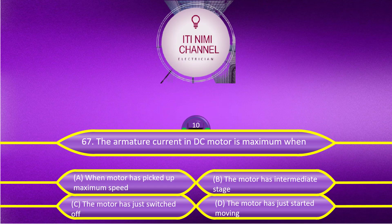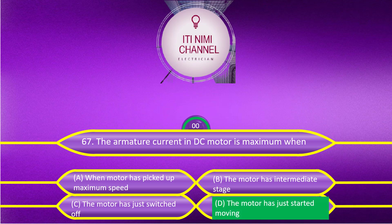The armature current in a DC motor is maximum when: Option A, the motor has picked up maximum speed; Option B, the motor is at an intermediate stage; Option C, the motor has just switched off; Option D, the motor has just started moving. The answer is Option D, the motor has just started moving.